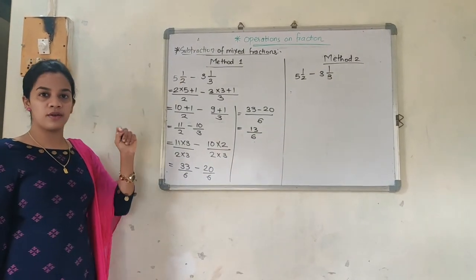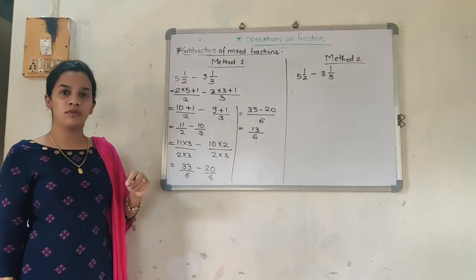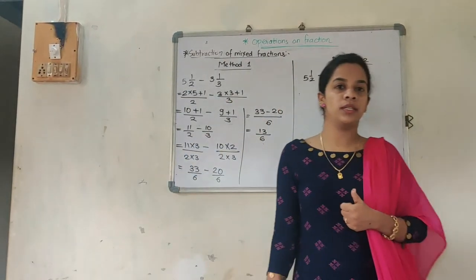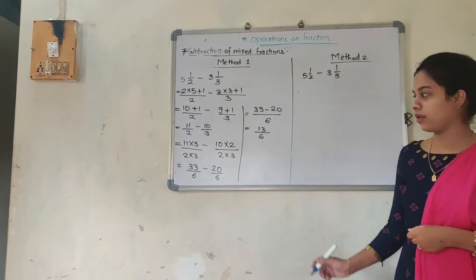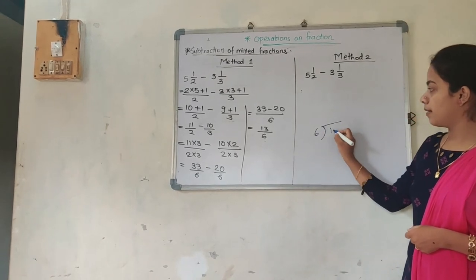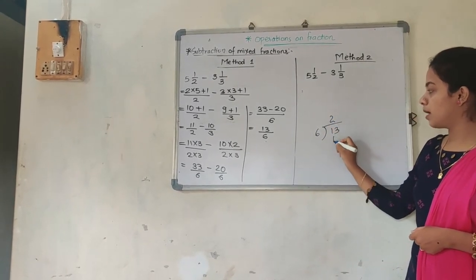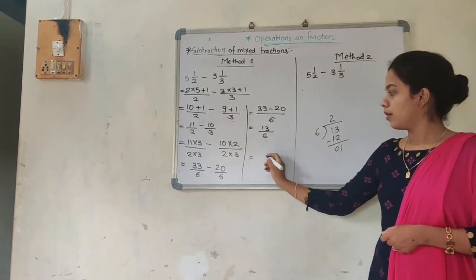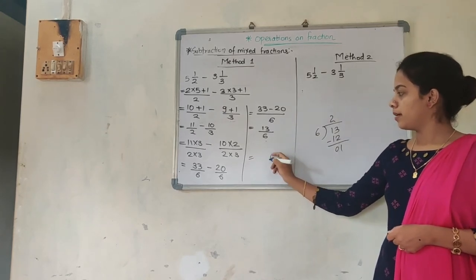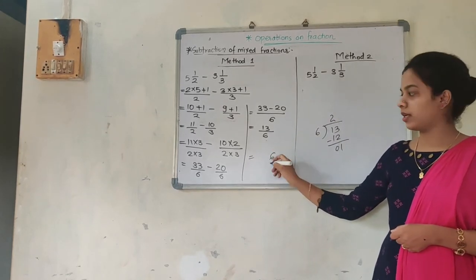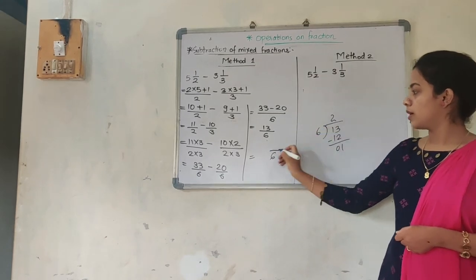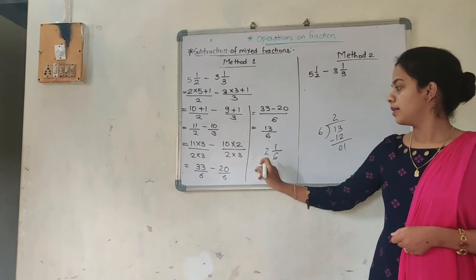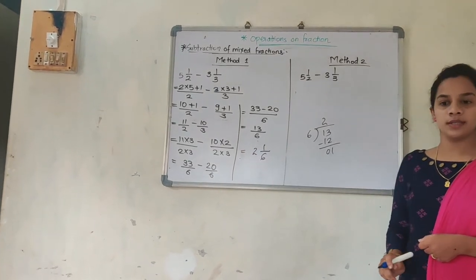Now the question was in mixed fraction, so the answer should also be in mixed fraction. So how am I going to convert 13/6 into mixed fraction? Divide it: 6 twos are 12, remainder is 1. So the denominator is 6, quotient is 2, remainder is 1. My answer is 2 and 1/6.